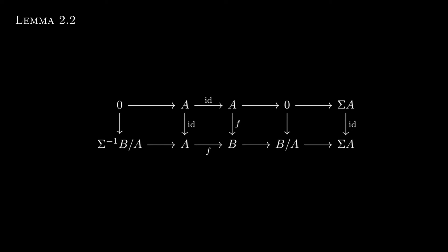Let f from A to B be a morphism of spectra. Since the stable homotopy category is triangulated, there exists a distinguished triangle with f as its first morphism. In particular, this distinguished triangle is A to B to B/A to shift A, where B/A is, in this case, the homotopy cofiber.